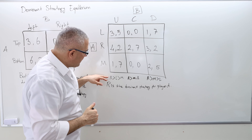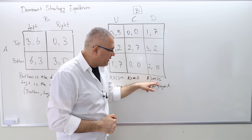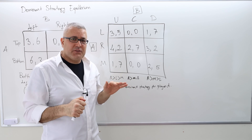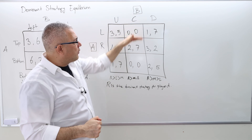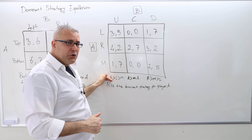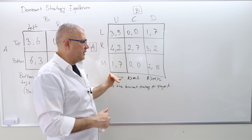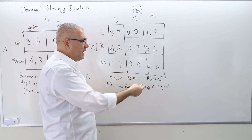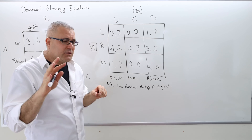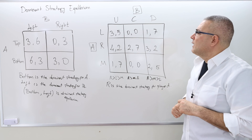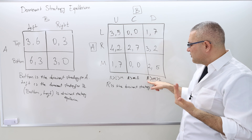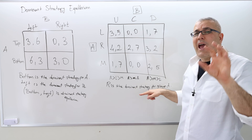An important note: the dominant strategy must hold for all columns — regardless of what your opponent does, the dominant strategy should yield strictly higher payoff. If a strategy is sometimes the same and sometimes better, we don't call it a dominant strategy. It has to be strictly better every time. There is also a concept of weak dominant strategy, but we don't discuss it in this course.